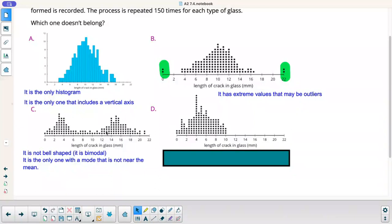This one here, it's not bell-shaped. It's actually bimodal because we have these two bell shapes kind of on the left side and the right side. And it's the only one with a mode that's not near the mean. The mode is the most frequent. Your mean is still kind of in the middle because it's still semi-symmetrical, not fully symmetrical, but still kind of if I put a line right here, it's pretty close to being symmetrical.